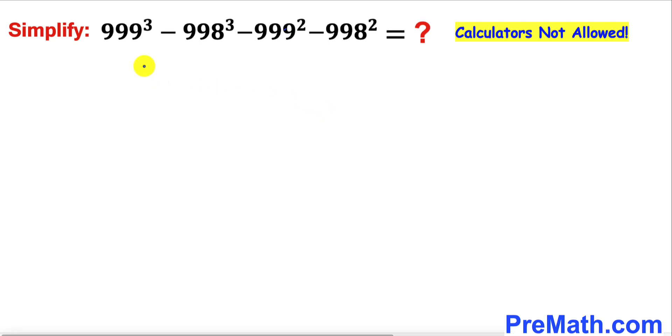Welcome to PreMath. In this video we are going to find the simplified value of this given exponential problem without using a calculator. Here we have 999³ - 998³ - 999² - 998².